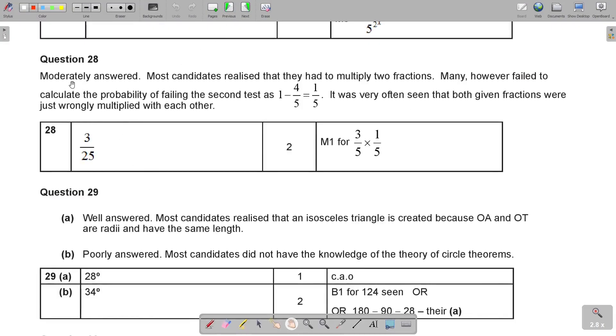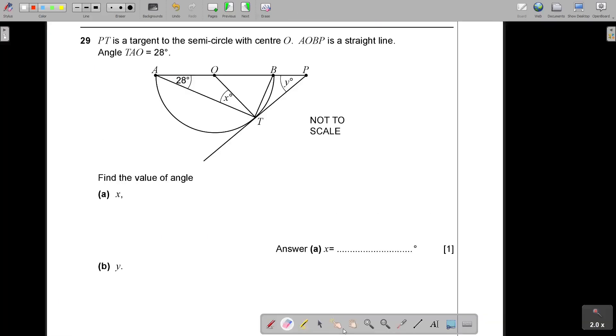Modestly answered, most candidates realize that they had to multiply two fractions. Many, however, fail to calculate the probability of failing the second test, that it becomes 1 over 5, and the second fraction. It was very often seen that both given fractions was just wrongly multiplied with each other. But that was the answer.